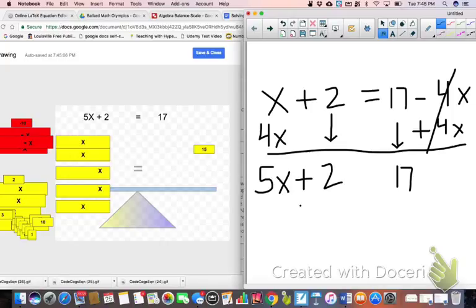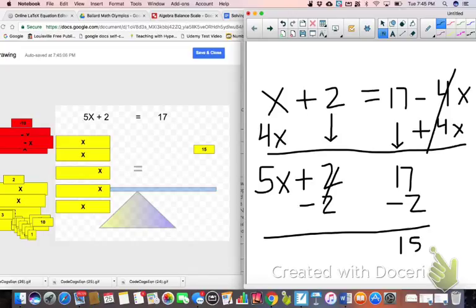If I'm going to do that same step on paper, this is what it would look like. I subtracted 2 from both sides of the equal sign. So now that's gone. 17 minus 2 means that I'm going to have 15 left over. Still need to bring those 5X's down because they have not gone anywhere.